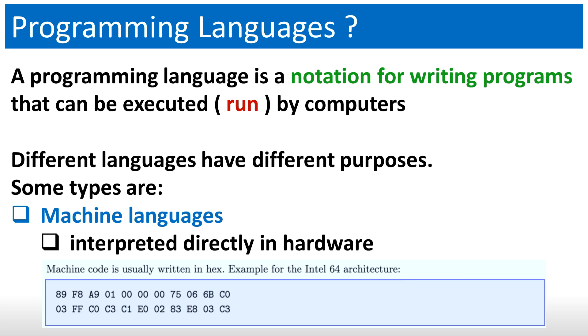What is a programming language? A programming language is a notation for writing programs that can be executed or run by computers.